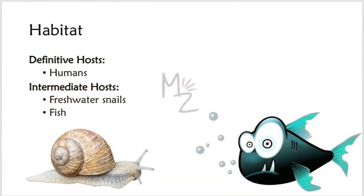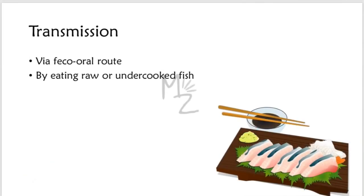Definitive hosts are human beings. The intermediate hosts are freshwater snails and fish. Transmission occurs via the feco-oral route and by eating raw or undercooked fish.